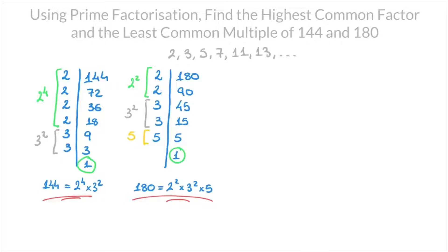We now have both numbers written as products of their prime factors. Now let's find the highest common factor, or HCF, of 144 and 180. To find the highest common factor, we focus on all of the prime factors that both of these numbers have in common. We can see that 144 has prime factors 2 and 3, and 180 has prime factors 2, 3, and 5. So the prime factors they have in common are 2 and 3.